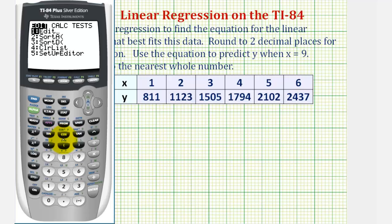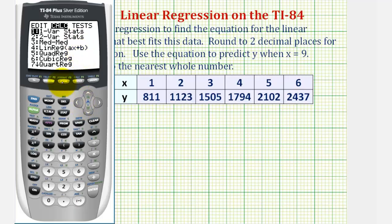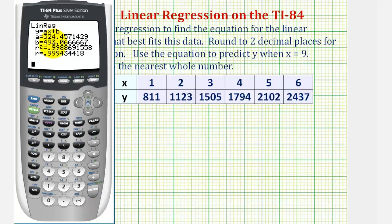We're going to press the stat key again, right arrow once to calculate, and linear regression is option 4. Select 4 and then enter. Notice A is the slope, rounded to two decimal places. This will be 324.46, and B, the y-intercept, will be 493.07, again rounded to two decimal places.